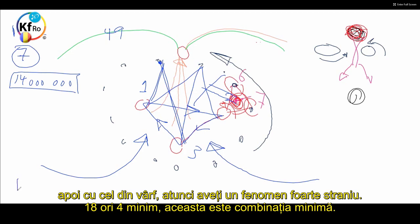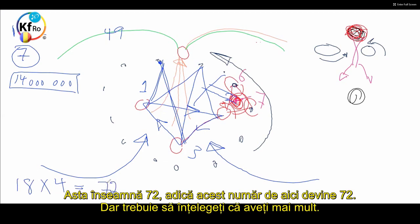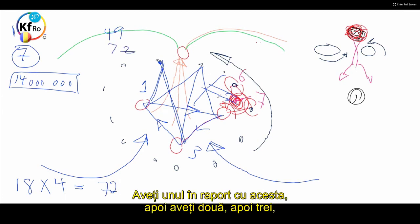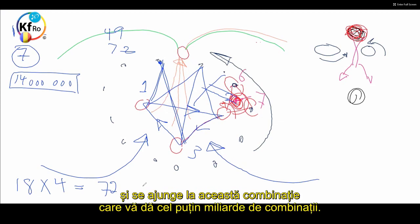But what you'll notice is that as you added the combination with this, and then you added with the top, you have a very strange phenomena. 18 by 4 minimum. That's a minimum combination. That's 72, which this number here becomes 72. But you got to understand you have more. You have one in respect to this, then you have two, you have three, and it goes up. This combination gives you at least minimum billions of combination.